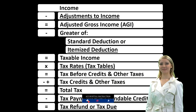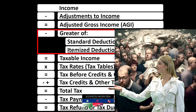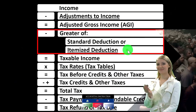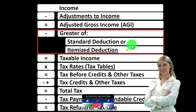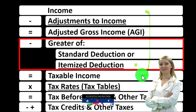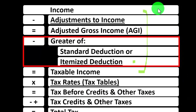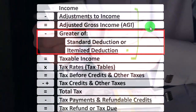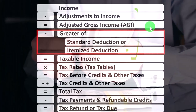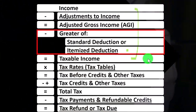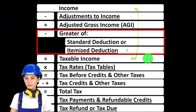Looking at the income tax formula, we're focused here on the itemized deductions, remembering that the first half of the income tax formula is in essence an income statement, where we have income minus the equivalent of the expenses — the deductions — equals the equivalent of net income, that taxable income.